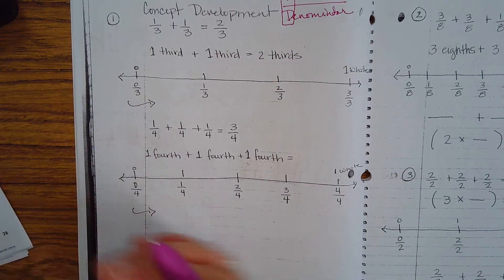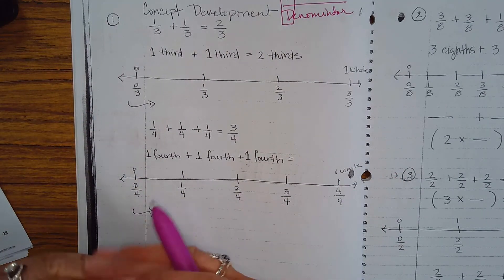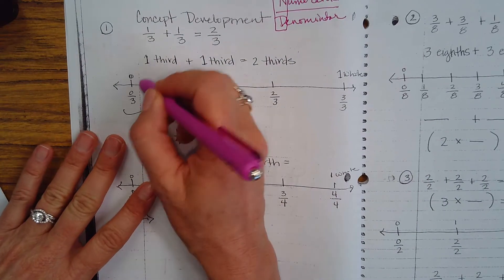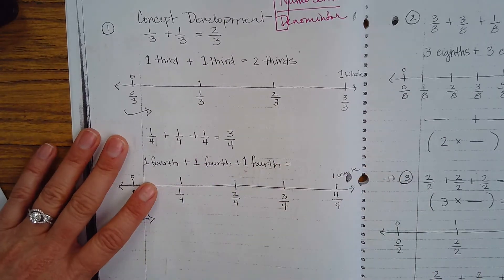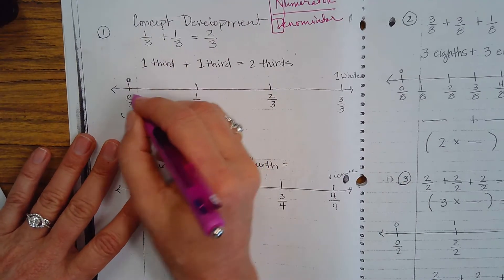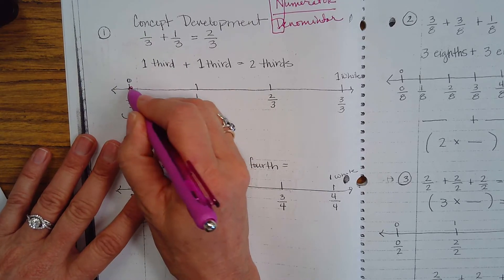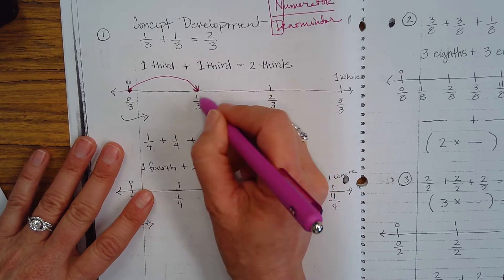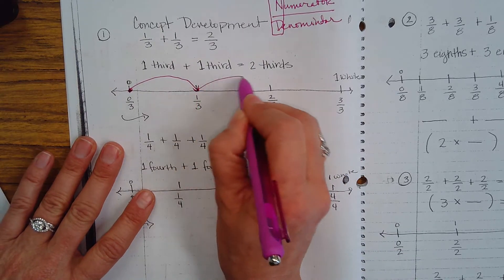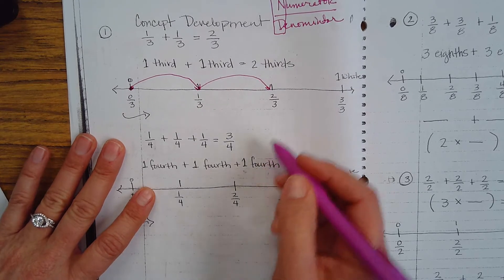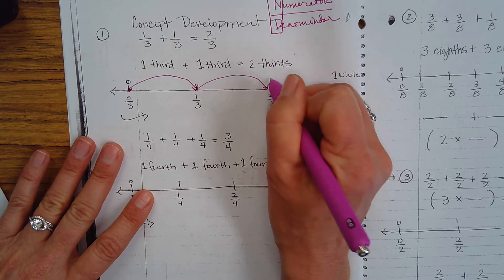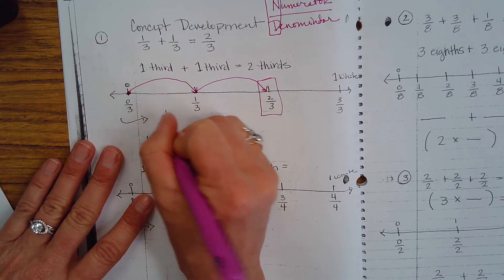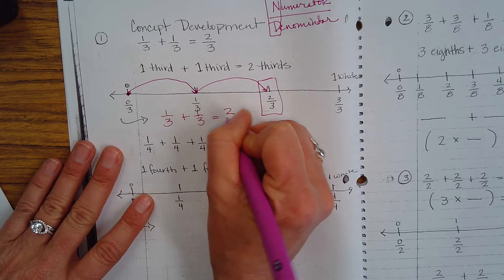All we're going to do today is add up fractions using the number line. So if you want to use pens or colors or your pencil, that's fine. Starting at zero, if I have one-third and I add a second one-third, I end up at two-thirds. So one-third plus one-third is equal to two-thirds.